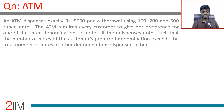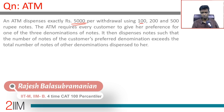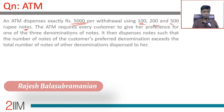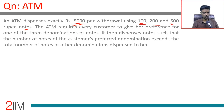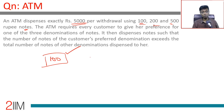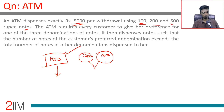An ATM dispenses exactly ₹5,000 per withdrawal using 100, 200, and 500 rupee notes. The ATM requires every customer to give their preference for one of the three denominations. The ATM then dispenses notes such that the number of notes of the customer's preferred denomination exceeds the total number of notes of the other denominations combined.